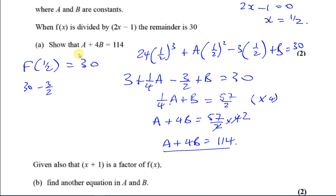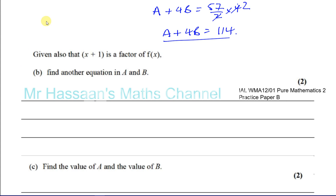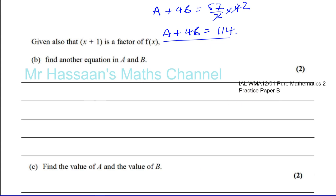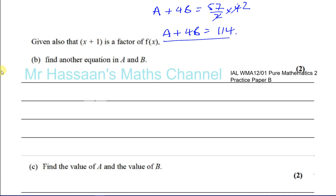The next part says: given also that x + 1 is a factor of f(x), find another equation in a and b. If x + 1 is a factor, then the remainder is zero when we substitute the root. Setting x + 1 = 0 gives x = −1, so substituting x = −1 into f(x) must equal zero.